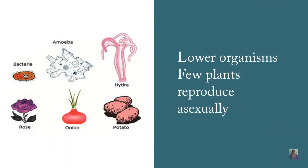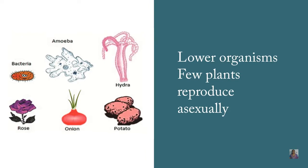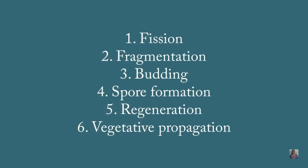In this video we are going to concentrate only on the asexual method of reproduction. Lower organisms like bacteria and amoeba will undergo asexual reproduction. A few plants which include onion and potato will also reproduce by asexual methods. There are different types of asexual reproduction which includes fission, fragmentation, budding, spore formation, regeneration, and vegetative propagation.